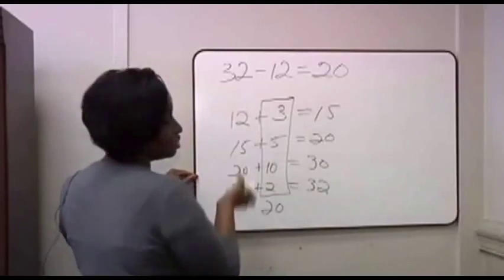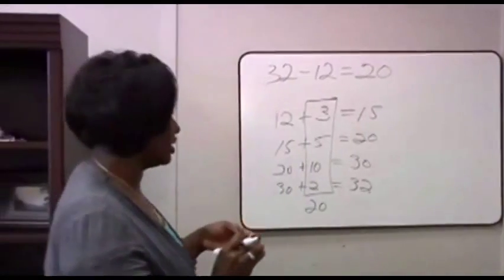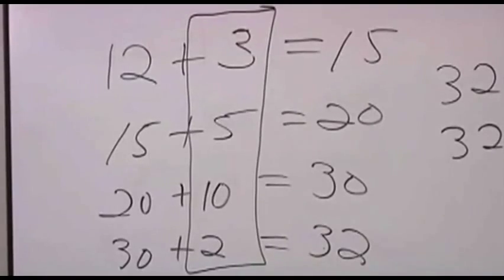Therefore, 32 minus 20 is 12. Again, just a different way to look at the problem. What's the reason behind this? So that students could understand quantitatively why they're doing what they're doing.